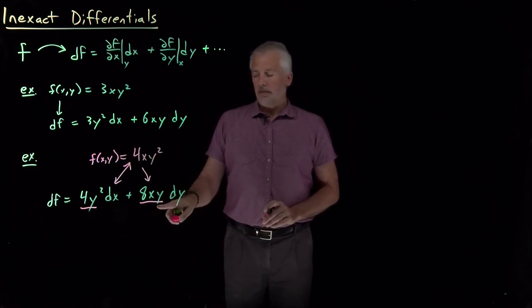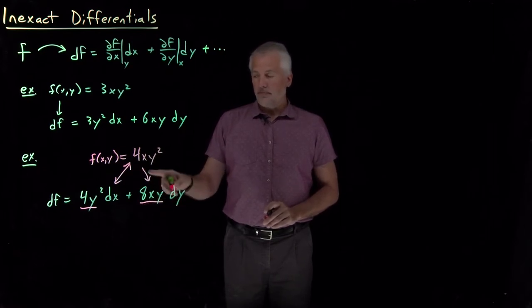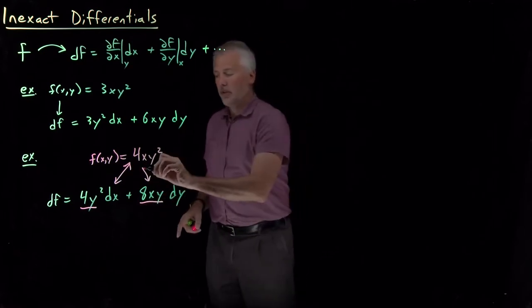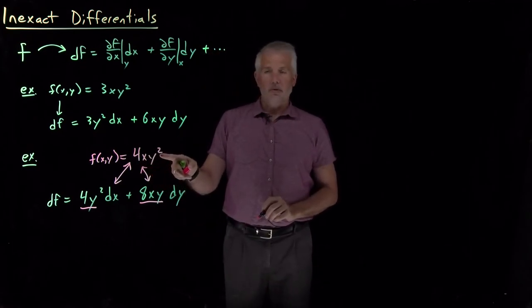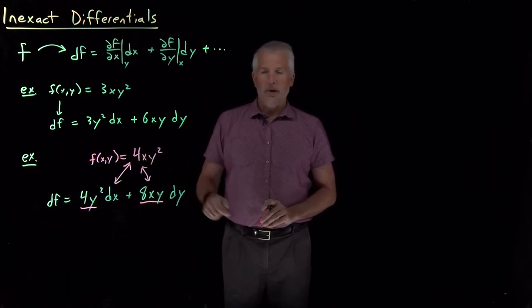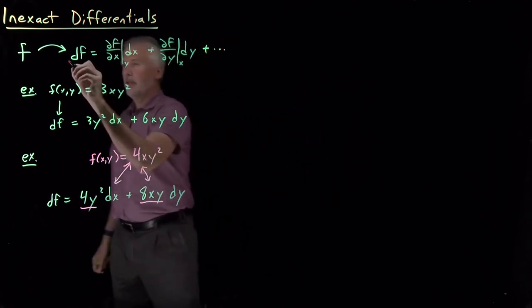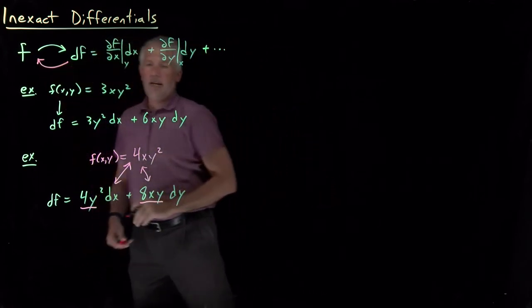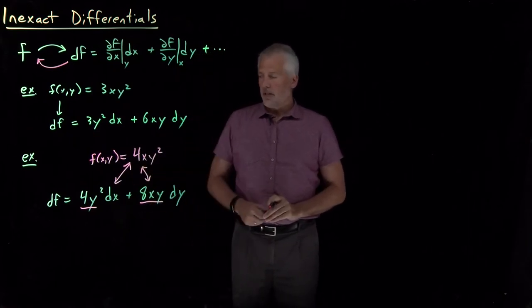Likewise, if I ask what function would have a partial y derivative of 8xy, the same one. When I go in this direction, I get back the same function, 4xy². If I take the partial derivative with respect to y, bringing down this exponent of 2, 4 times 2 gives me 8xy when I drop the power of y. So in this case, we've gone in this direction. Given a df, we could calculate the function f that gives rise to this differential.